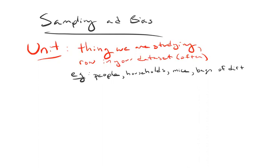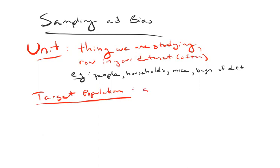So it's a really simple concept, but you do need to know what your unit of analysis is. The next idea we're going to define is the target population. The target population is the set of units you'd like to learn about — the set of units of interest.